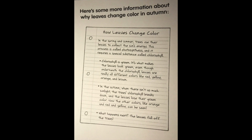Here's some more information about why leaves change colour in autumn. In the spring and summer, trees use their leaves to collect the sun's energy. This process is called photosynthesis, and it requires a special substance called chlorophyll. Chlorophyll is green — it's what makes the leaves look green. Even though underneath the chlorophyll, leaves are really all different colours, like red, yellow, orange, and brown.